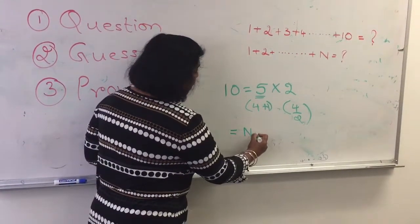So if this is true, let's look at what will be the sum of the first n numbers. So the sum of the first n numbers should be n plus 1 times n divided by 2.